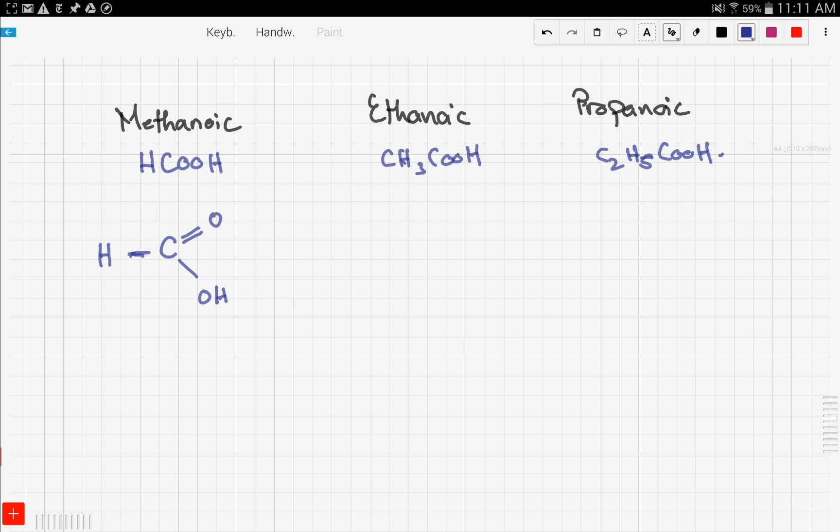Now let's move on to ethanoic acid. It's going to be very similar. We start with the backbone, so here are our Cs, and they're single bonded. Then we put our Hs, so here are our three hydrogens. Then we have our double bond and the OH bond.